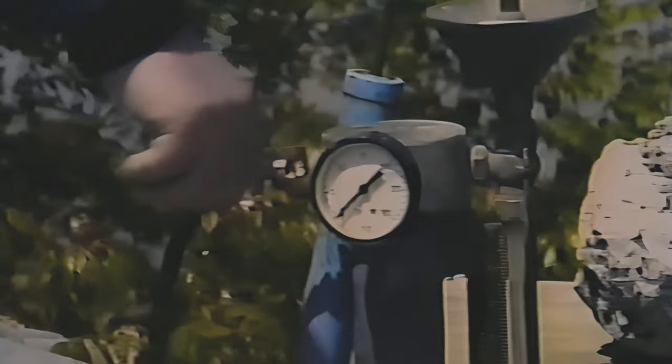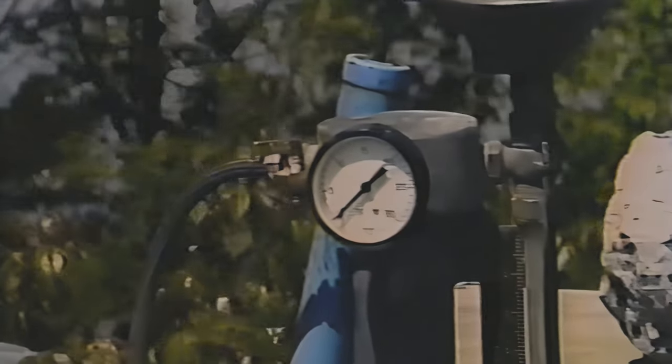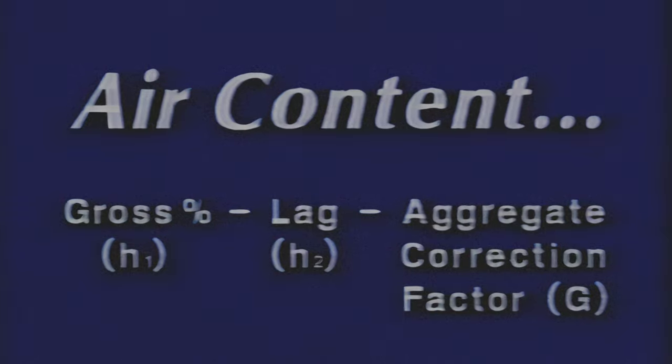Then the pressure is released and the water level on the graduated scale is read. This value is the lag, or H sub 2. The air content of the concrete is the gross percentage H sub 1, minus the lag H sub 2, minus an aggregate correction factor G. Determination of the aggregate correction factor using both meters is covered in T152.